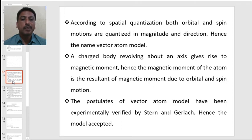A charged body revolving about an axis gives rise to a magnetic moment. Hence, the magnetic moment of an atom is a resultant of magnetic moment due to orbital as well as spin motion. The postulates of vector atom model have been experimentally verified by Stern and Gerlach. Hence, the vector atom model was accepted.